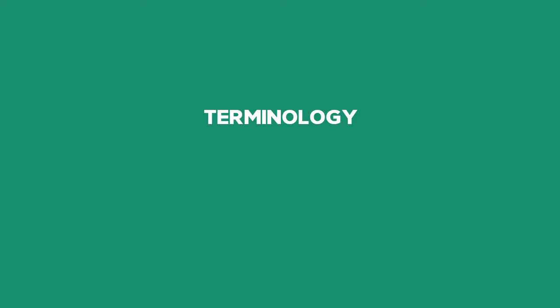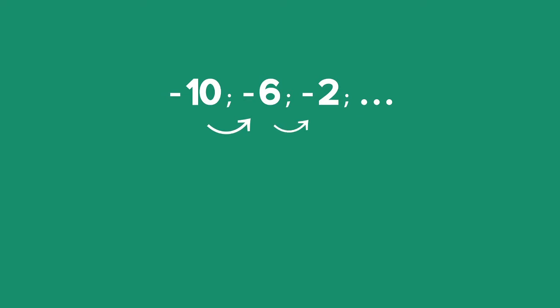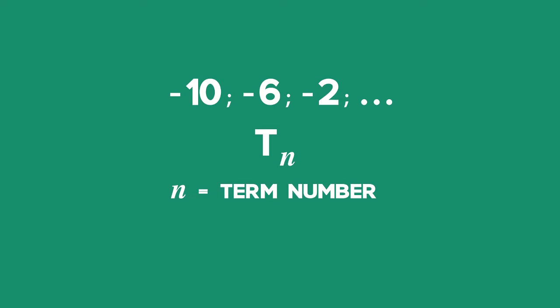Let's look at the terminology and notation used in sequences. Consider the sequence negative 10, negative 6, negative 2, and so on. We refer to the first term of a sequence using the letter A, and the common difference by the letter D. We use TN to refer to a term in the sequence, where the subscript N tells us which term we're dealing with. So T1 refers to term 1, and T1 is equal to A. For the given sequence, A is equal to negative 10.